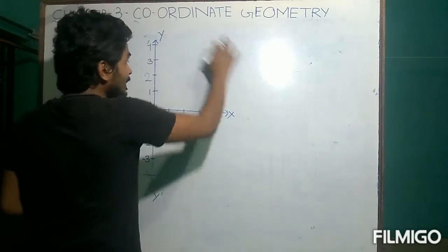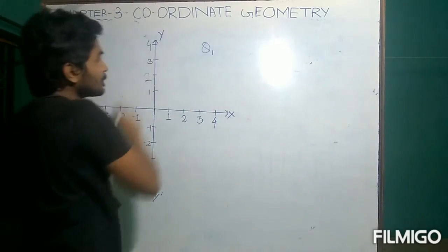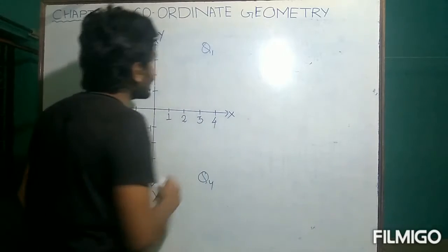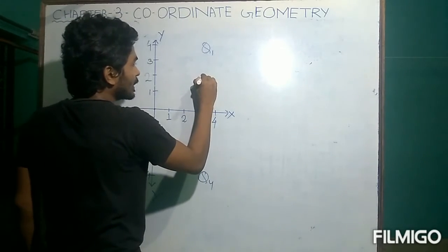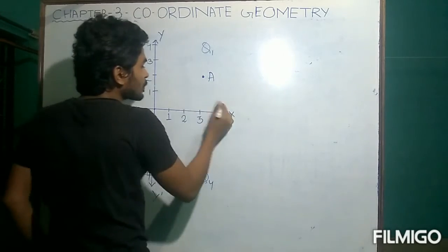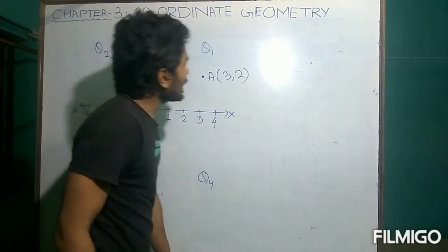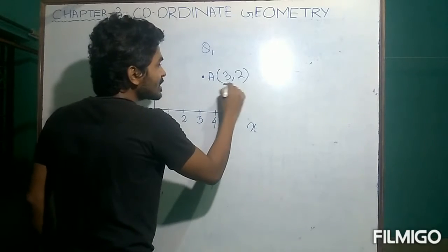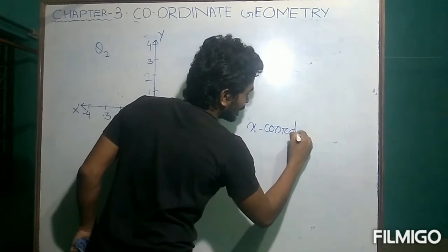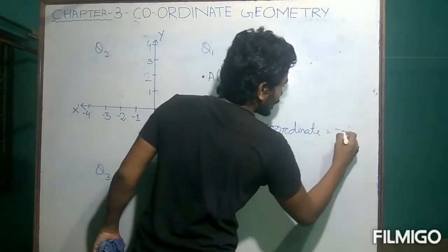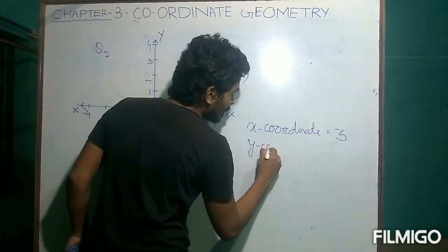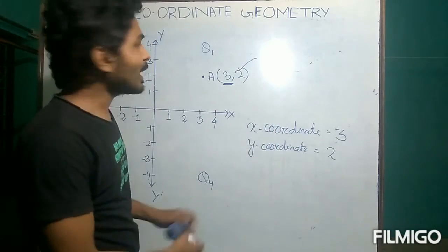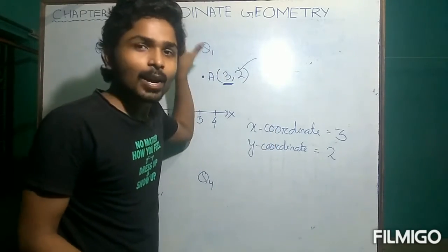In the Cartesian coordinate system we have four quadrants. If there is a point X with coordinates (3, 2), we can identify: the first term, 3, is the x-coordinate, and the second term, 2, is the y-coordinate. This point lies in quadrant 1. Both x and y coordinates are positive in quadrant 1.